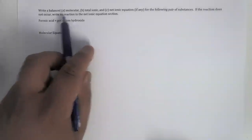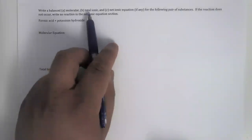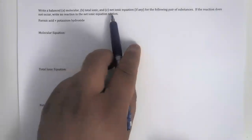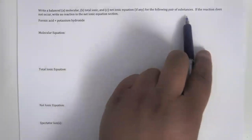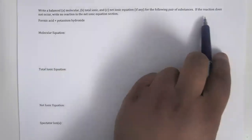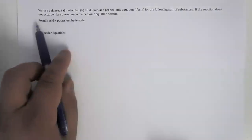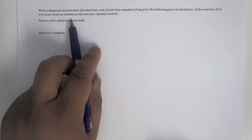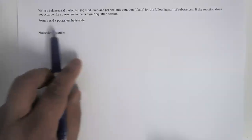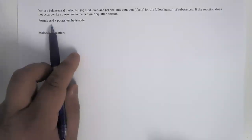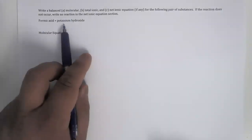Here is the problem. Write a balanced molecular, total ionic, and net ionic equation, if any, for the following pair of substances. If the reaction does not occur, write no reaction in the net ionic equation section. The substances are formic acid and potassium hydroxide.